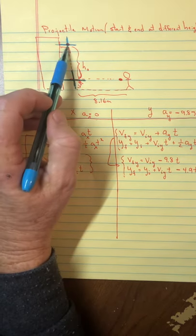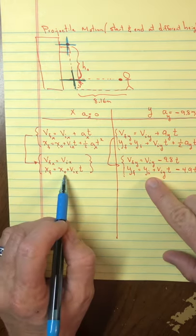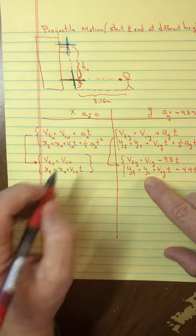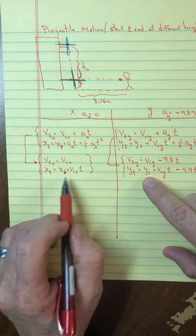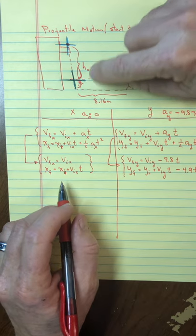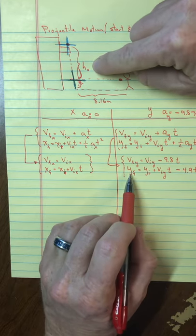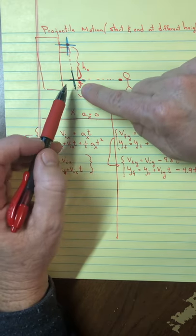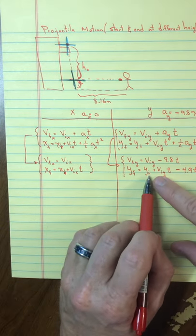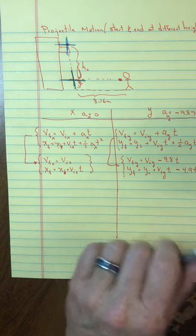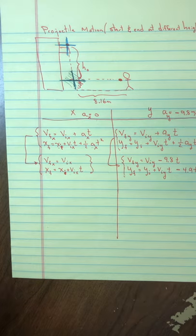If you use the launch point as your origin, then the initial position — both x and y — would be zero. That's the advantage. Of course, now the keys go down, so the final position in the y direction would be a negative value — that's the disadvantage. Whereas if we use the bottom corner as origin, the horizontal initial position would still be zero, but the starting y position would be H-naught. I'll go with the launch point origin.